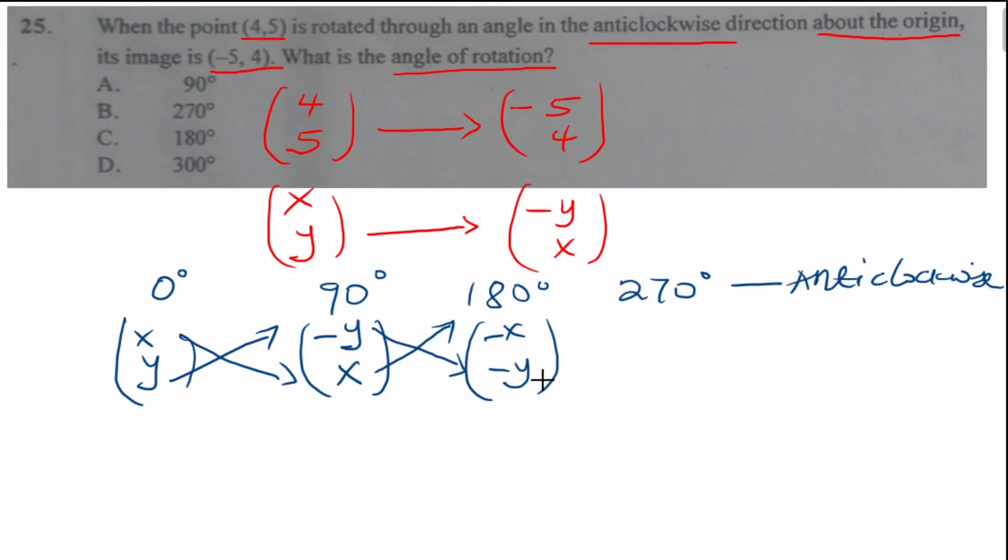And then from 180 to 270, energy is lost, so we negate this and it becomes positive y. And then x comes down, energy is conserved, so we still have (-x). That means 270 degrees anti-clockwise rotation has the image (y, -x).